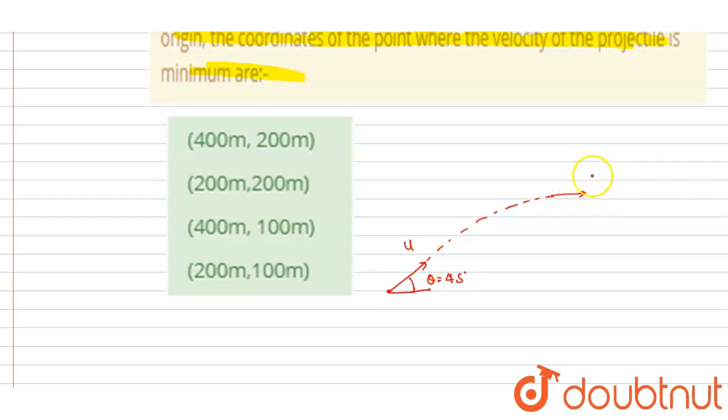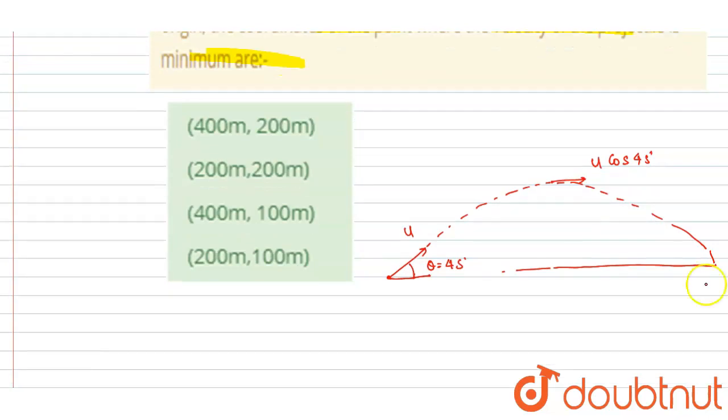here it will have minimum velocity, that is u cos 45, since the vertical velocity is zero here. So the velocity overall is minimum. So here, if I talk about the coordinates, the y-coordinate is maximum height and x-coordinate is range by 2.